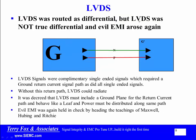LVDS was routed as differential, but LVDS was not true differential, and the evil EMI arose again. LVDS signals were really complementary single-ended signals, which require a ground return signal path, as did all single-ended signals. Without this return current path, LVDS could radiate. It was decreed that LVDS must include a ground plane for the return current path, and that it must behave like a leaf, and power must be distributed along the same path. Evil EMI was again held in check by heeding the teachings of Maxwell, Hubing, and Ritchie.